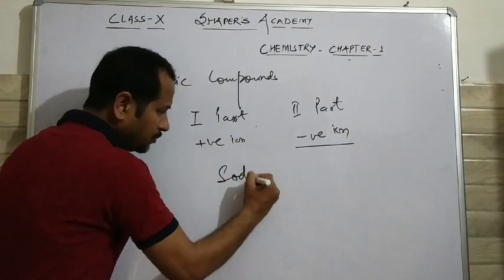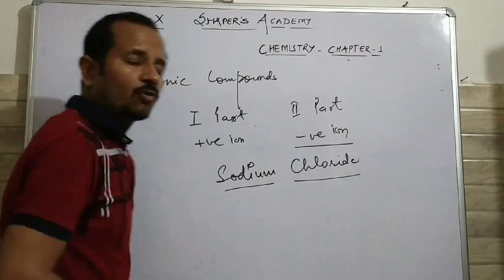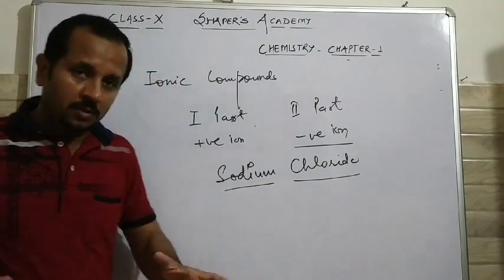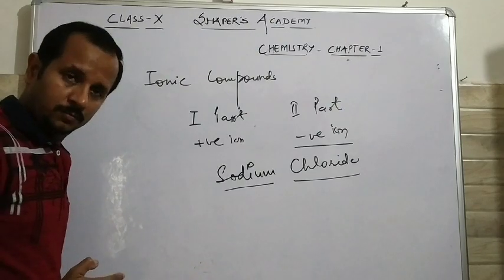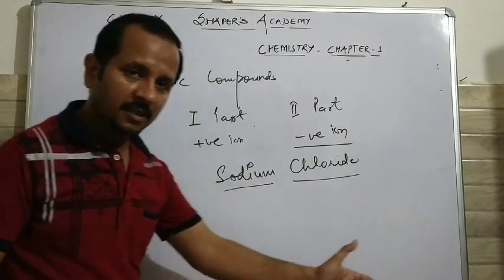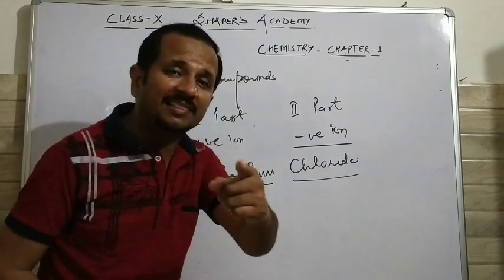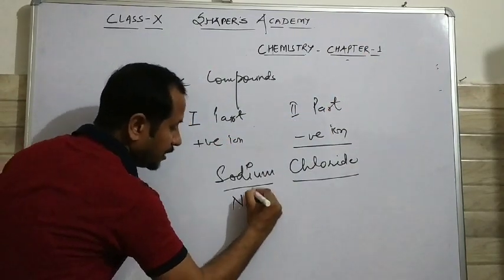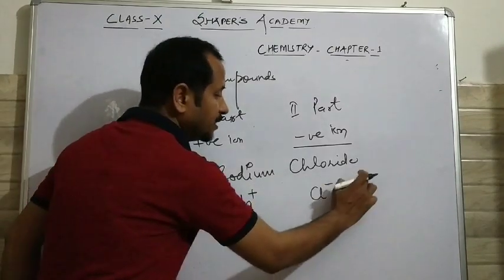For example, sodium chloride. Now write the symbols of sodium ion and chloride ion. The symbol of sodium ion is Na⁺¹ and the symbol of chloride is Cl¹⁻.